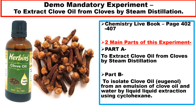There are two main sections for this experiment. Part A is to extract the clove oil from whole cloves by steam distillation. Part B is to isolate the clove oil from an emulsion of clove oil and water by a process called liquid-liquid extraction, using cyclohexane, which is an organic solvent.